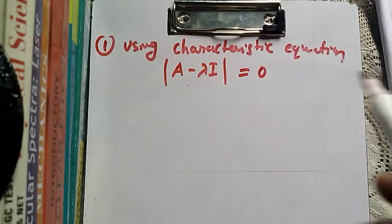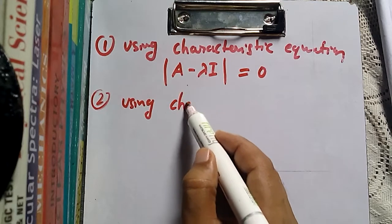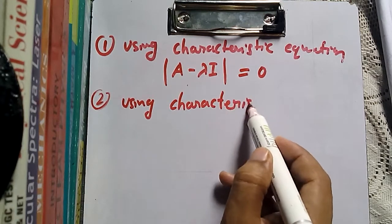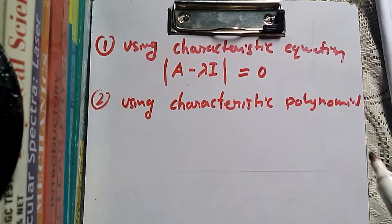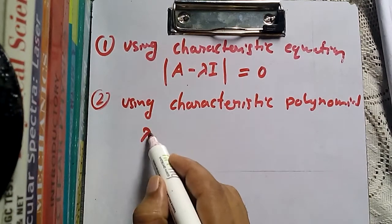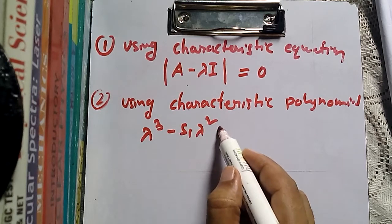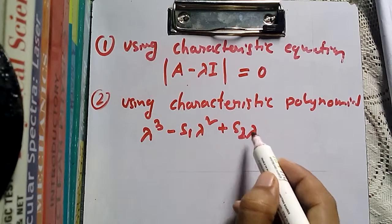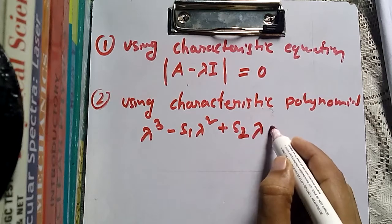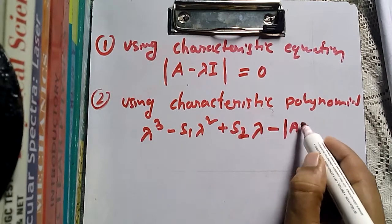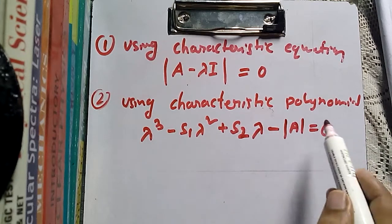We can also find eigenvalues using the characteristic polynomial method. The characteristic polynomial equation is: lambda cubed minus S1·lambda squared plus S2·lambda minus determinant of A equals zero. This is the characteristic polynomial equation.